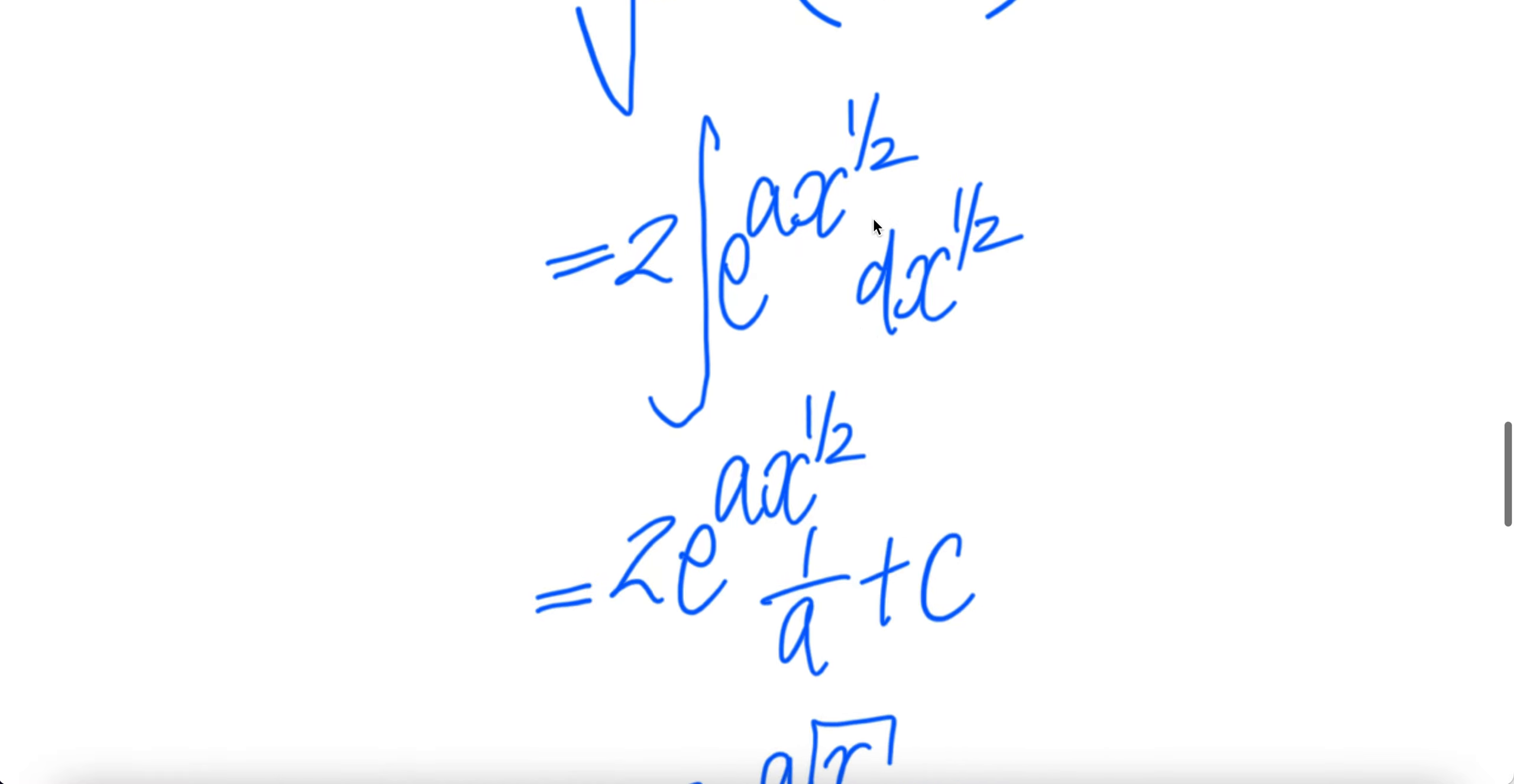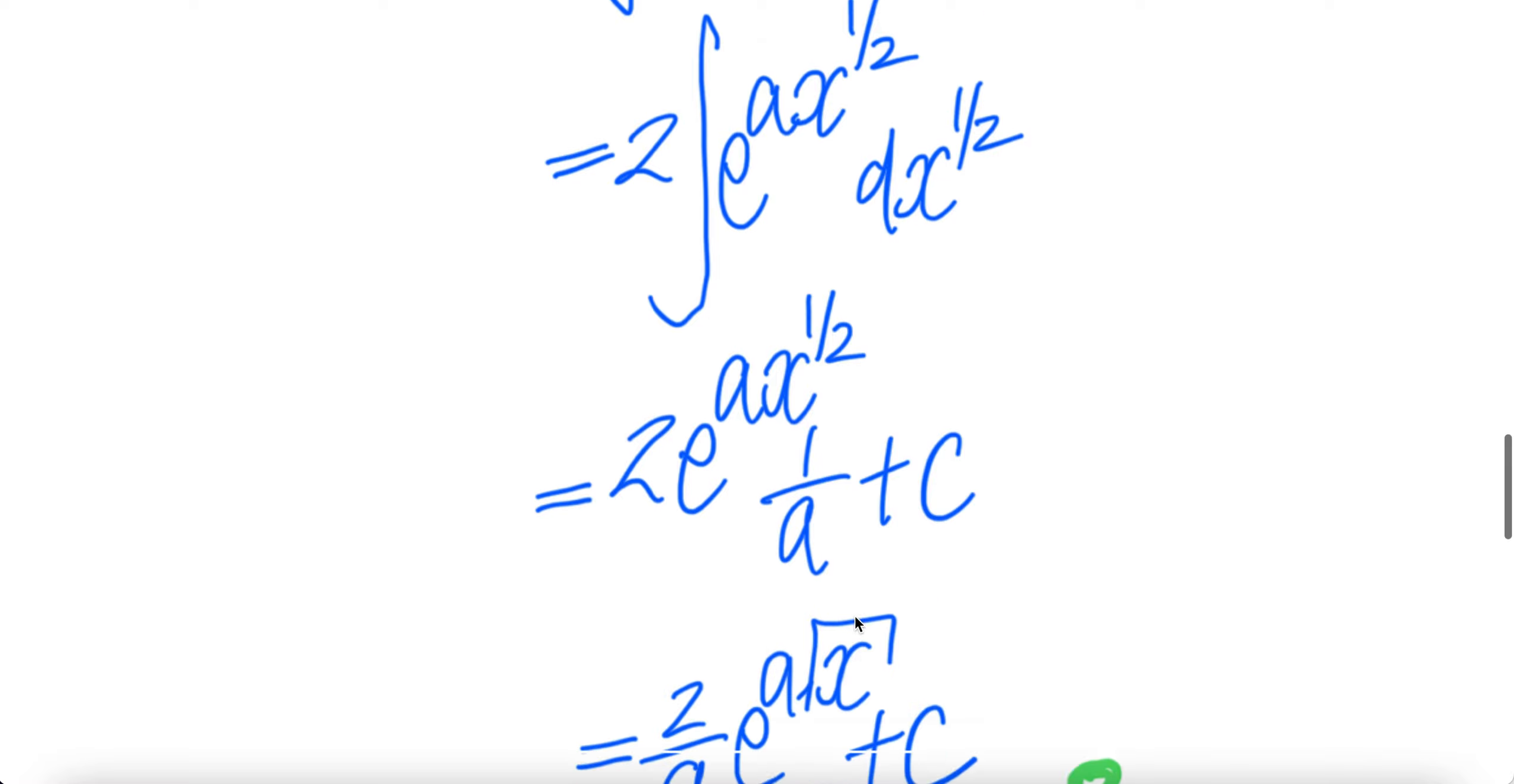Now you have a simple integral. The integral of these is e to the power of a, x to the power of half. Check for coefficient 1 here, a here, different. Therefore value divided by a for correction.